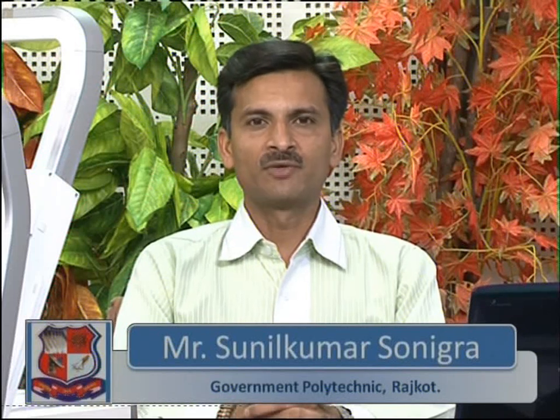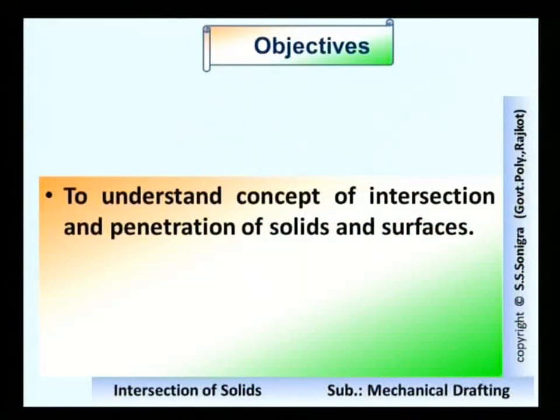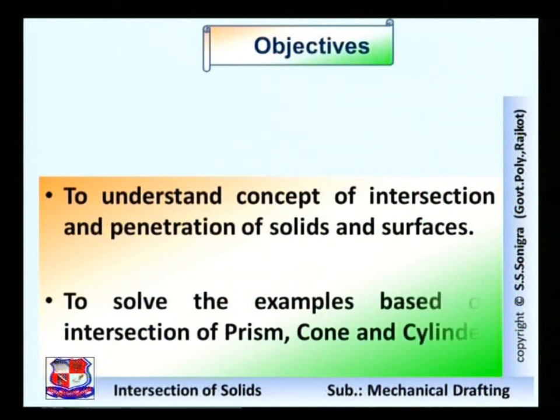Hello dear friends, myself Sunil Sonigra. Today in the subject of mechanical drafting we will consider a chapter titled 'Intersection and Penetration of Solids and Surfaces.' In this chapter we will discuss the solution of problems based on intersection of prism, pyramid, cylinder and cone. The objectives are: to understand the concept of intersection and penetration of solids and surfaces, and to solve examples based on intersection of prism, cylinder and cone.